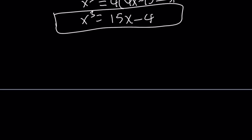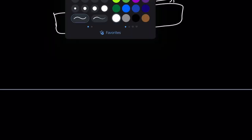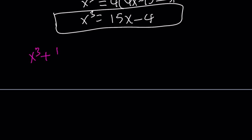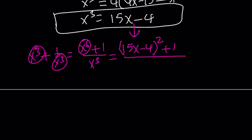Now, we do need x cubed plus 1 over x cubed, right? That's what I need. So I can replace x cubed with that. But let's go ahead and make a common denominator first. So that's going to give me x to the sixth power plus 1 divided by x to the third by making a common denominator. Now, x cubed squared is basically x to the sixth power. So I can write this as x to the sixth as 15x minus 4 squared, which is from here, plus 1. And that is divided by x cubed, which can be replaced by 15x minus 4. Makes sense? So we're going to go ahead and square this.